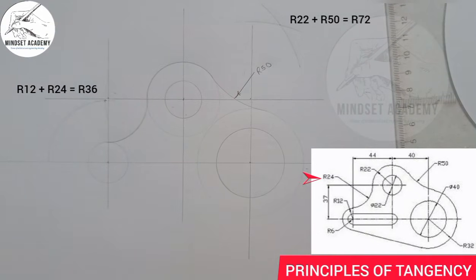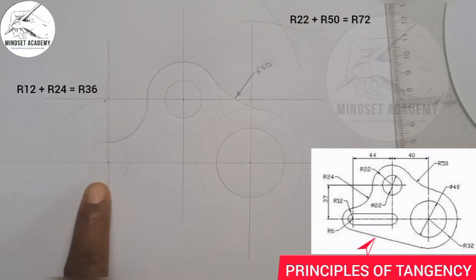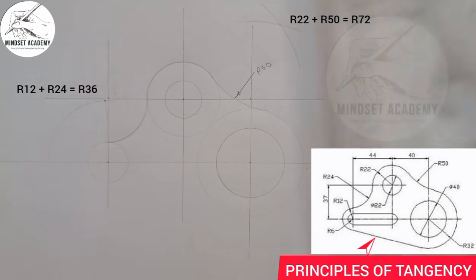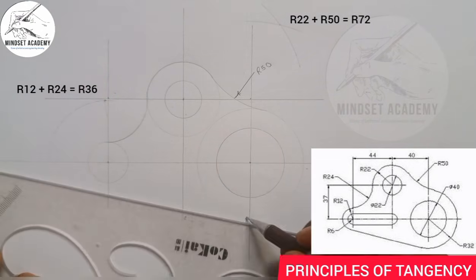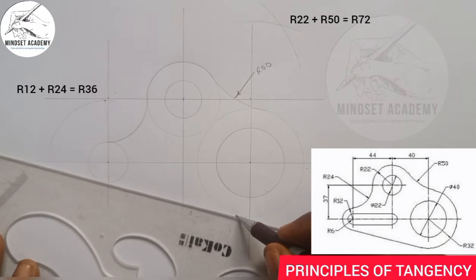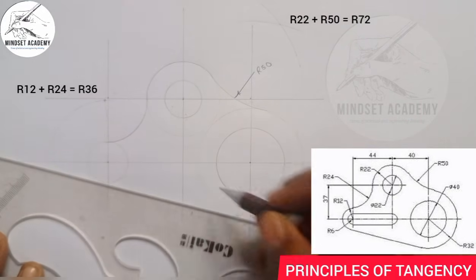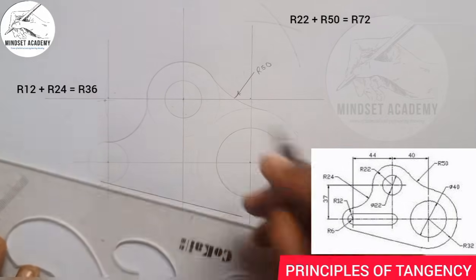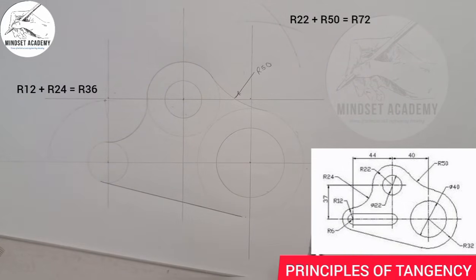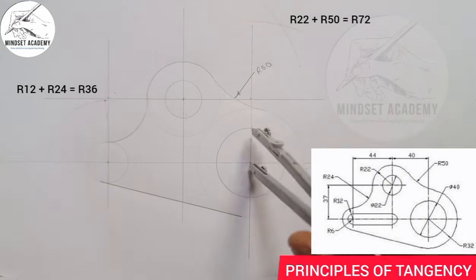Once I've done that, it is connected. There's a line that is tangent to these two circles, as you can see from the diagram. So I'll take my set square and connect a line down, tangential to each other — the tangent line. I'll complete this from here.